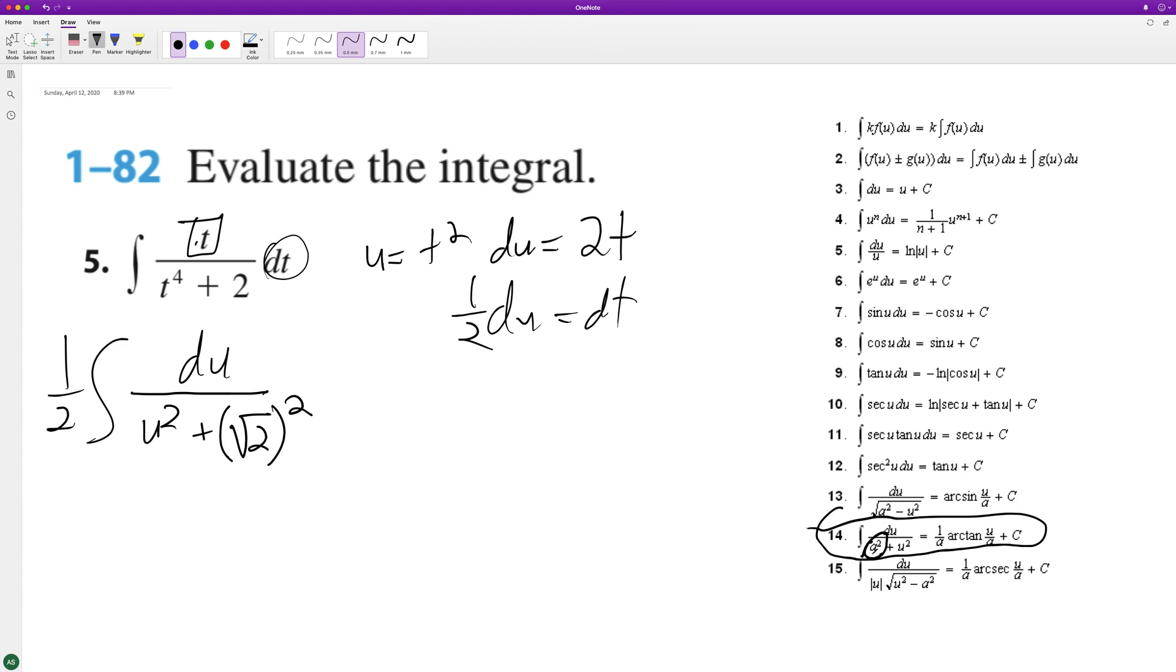So now that we have that, we have this property. So one over a, so one over the square root of two. And actually we have one half on the outside here. And then we have our arc tangent or inverse tangent of, it's going to be u over the square root of two or u over a plus C.